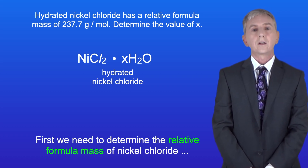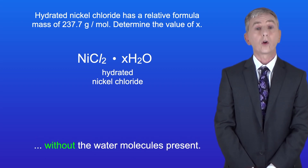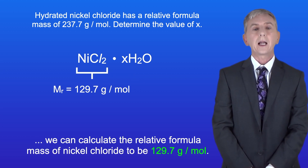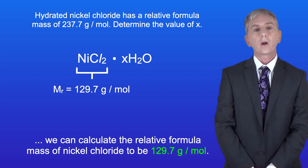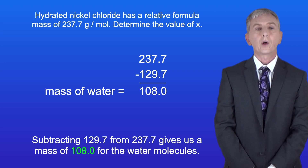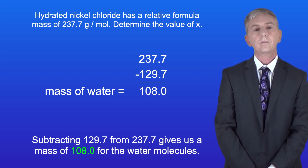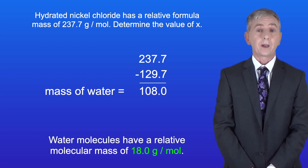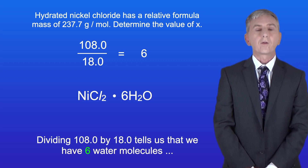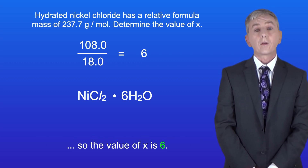First we need to determine the relative formula mass of nickel chloride without the water molecules present. Using the relative atomic masses from the periodic table we can calculate the relative formula mass of nickel chloride to be 129.7 grams per mole. Subtracting 129.7 from 237.7 gives us a mass of 108.0 for the water molecules. Water molecules have a relative molecular mass of 18.0 grams per mole. Dividing 108.0 by 18.0 tells us that we've got six water molecules, so the value of X is six.